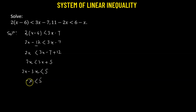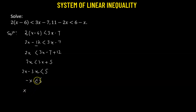Now we want to make the coefficient of x positive. All we have to do is multiply both sides by negative 1, but in doing so the sign of the inequality is going to change. So that means we'll have x greater than negative 5.